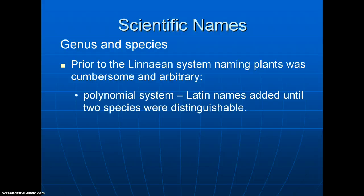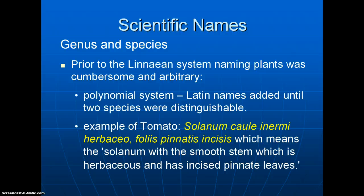Prior to this system, the naming of plants was far more cumbersome and arbitrary. If you think learning two Latin names is difficult, imagine what it would have been like before Linnaeus. In that polynomial system, Latin names were added and added until the two species were distinguishable. For example, the common tomato was called Solanum caule inermi herbaceo foliis pinnatis incisis, meaning 'the solanum with the smooth stem which is herbaceous and has incised pinnate leaves.' So we can be thankful we only have to learn two names.